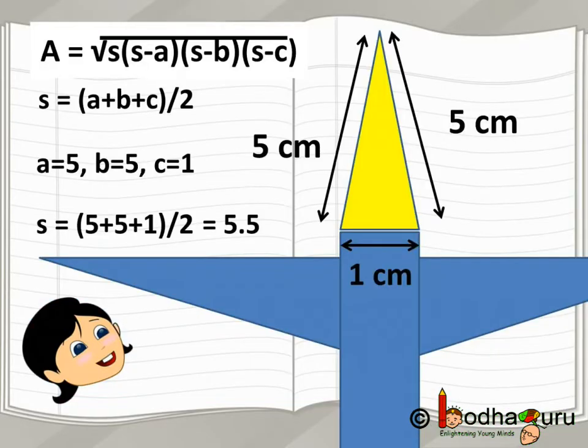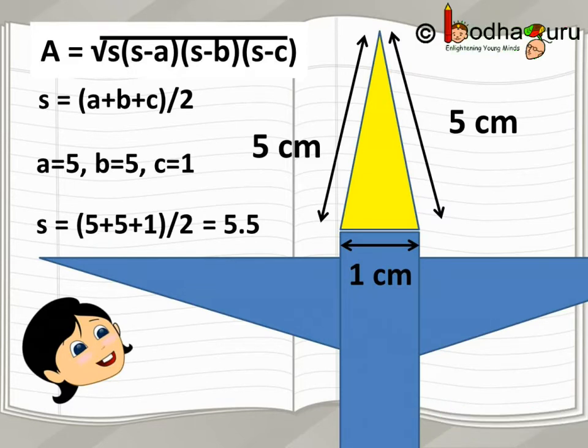So, to calculate the area, let us use Heron's formula which says area of any triangle is equal to square root of s multiplied by s minus a multiplied by s minus b multiplied by s minus c, where s is the semi-perimeter, that is half of the perimeter.